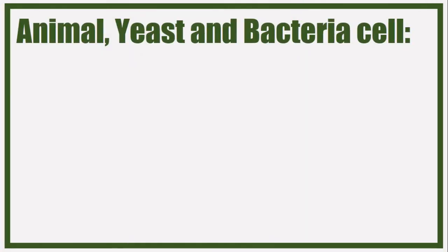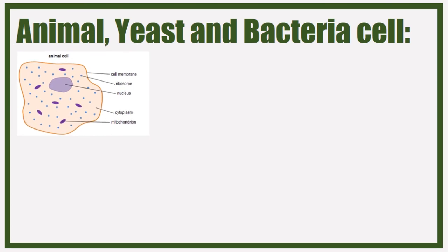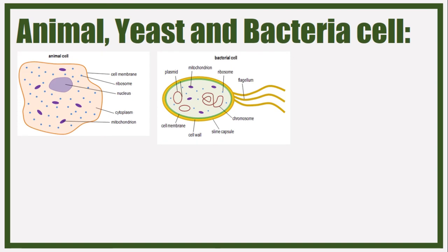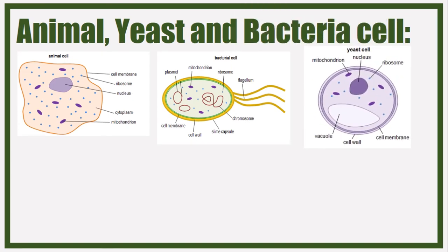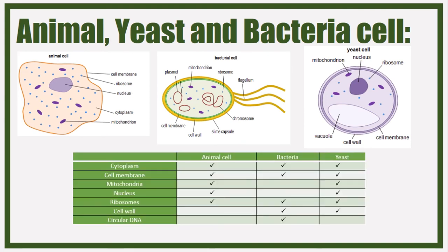Now, the structure of animal, yeast, and bacteria cells. These cell components do the same things as described for plant cells, but animal cells don't include certain structures that plant cells have. There is a table summarizing what each cell type contains - for a plant cell you'd basically tick everything except circular DNA.